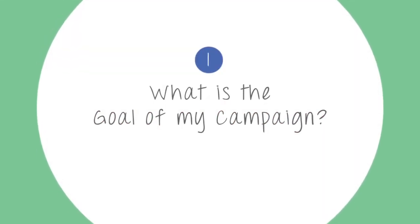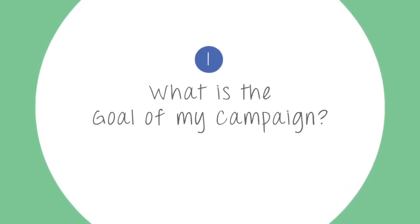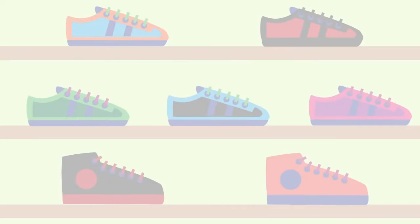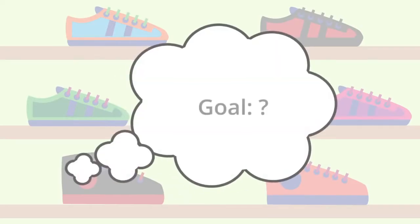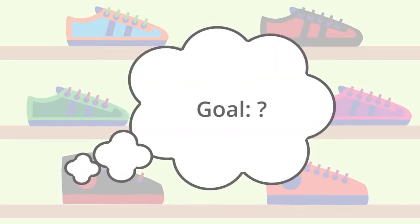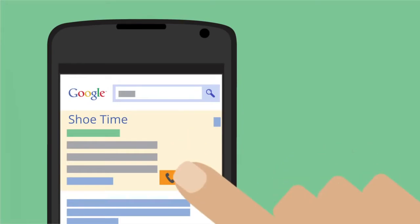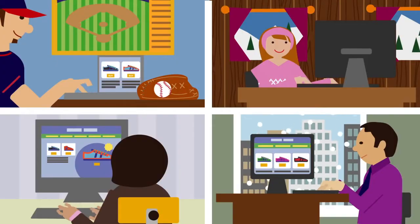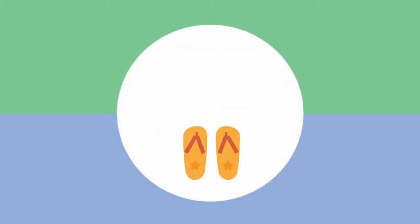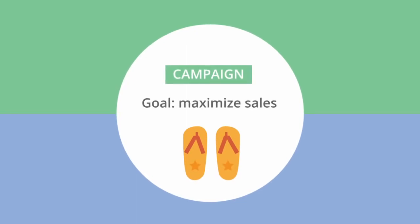What is the goal of my AdWords campaign? The first step in planning your campaign is deciding what you want to achieve. Are you looking to sell more products online? Get more phone calls to your business? Maybe you just want more website traffic. In most cases, one campaign, one goal is a good rule of thumb.